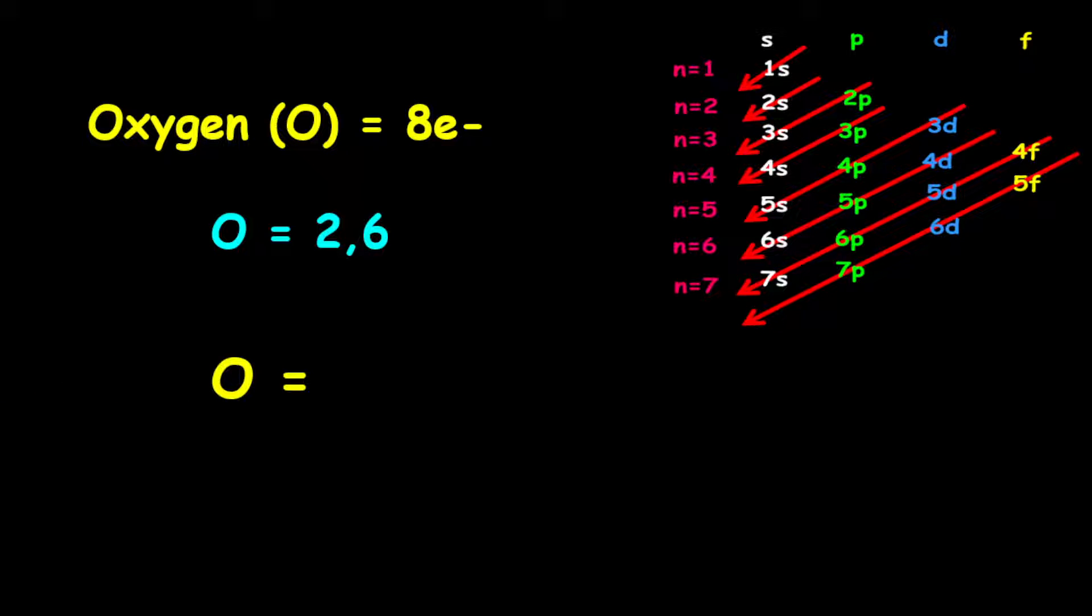For the orbital filling electron configuration, it is given as 1s2, followed by 2s2, then 2p4.